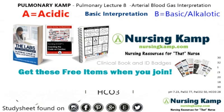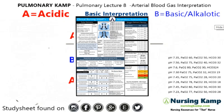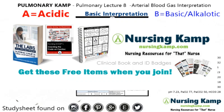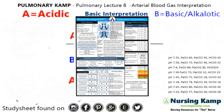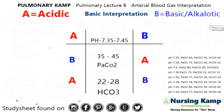It's done in three steps and we're going to talk about the first one found on NursingCamp.com. The easiest way to interpret ABGs is the ABBAB method. The ABBAB method is a method that you can use for basic interpretation.